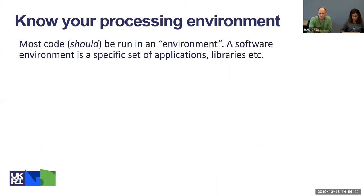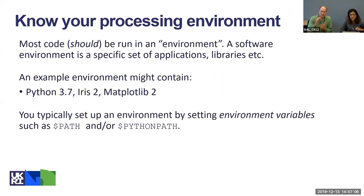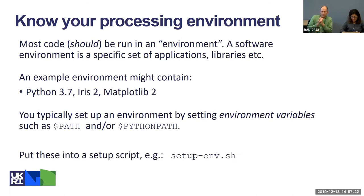It's important to know your processing environment — a specific set of applications or libraries needed to run. For example: a Python 3.7 environment using Iris version 2 and Matplotlib version 2. Your environment is defined by environment variables — items appended to PATH or PYTHONPATH. We recommend putting all of these changes into a single setup script such as setup_env.sh, so it's a one-liner each time you need to configure your environment.